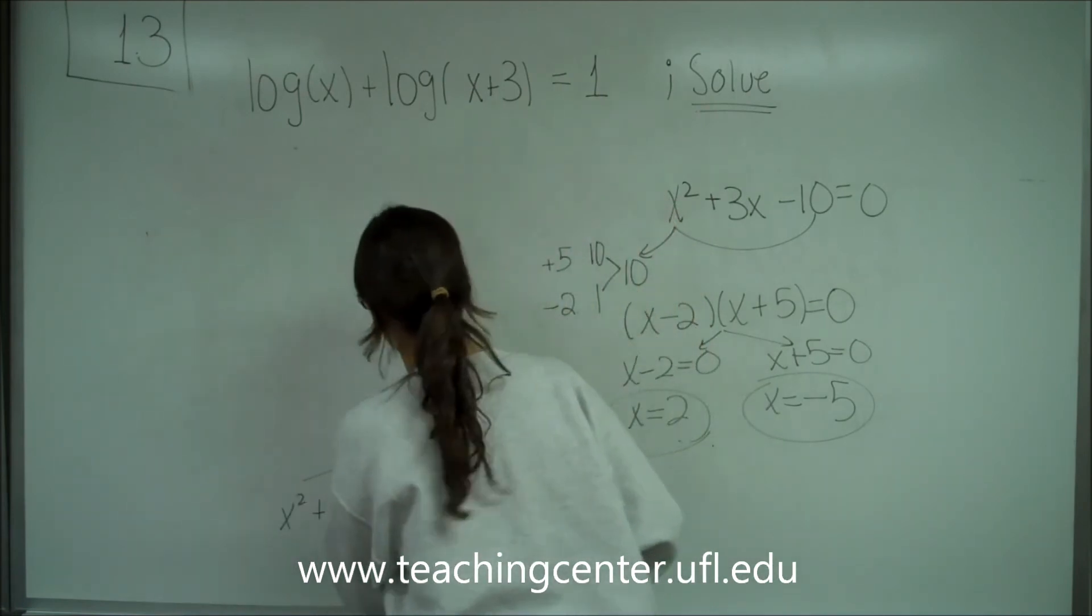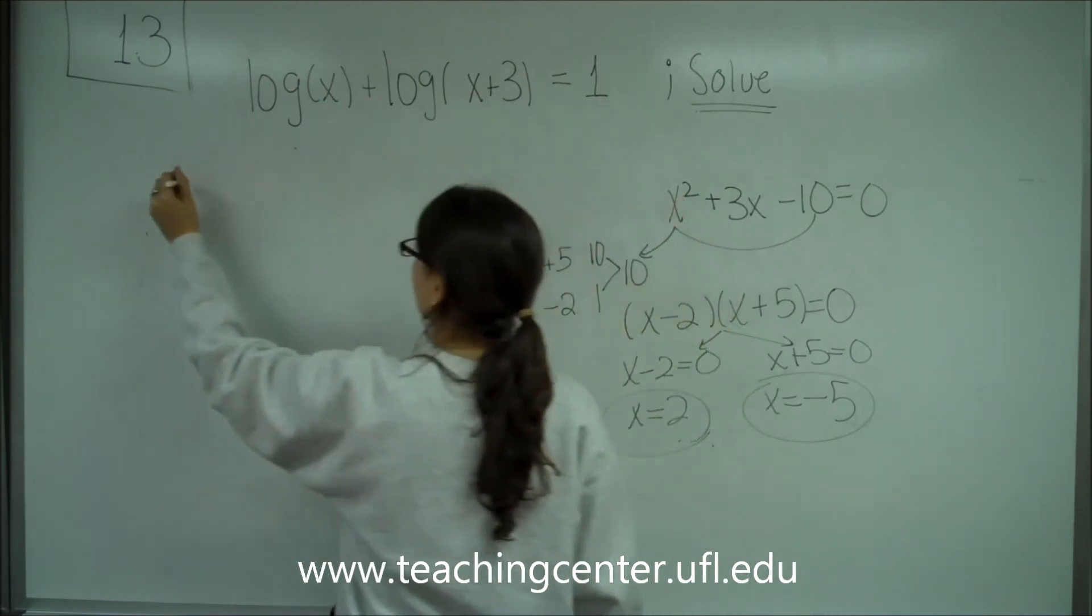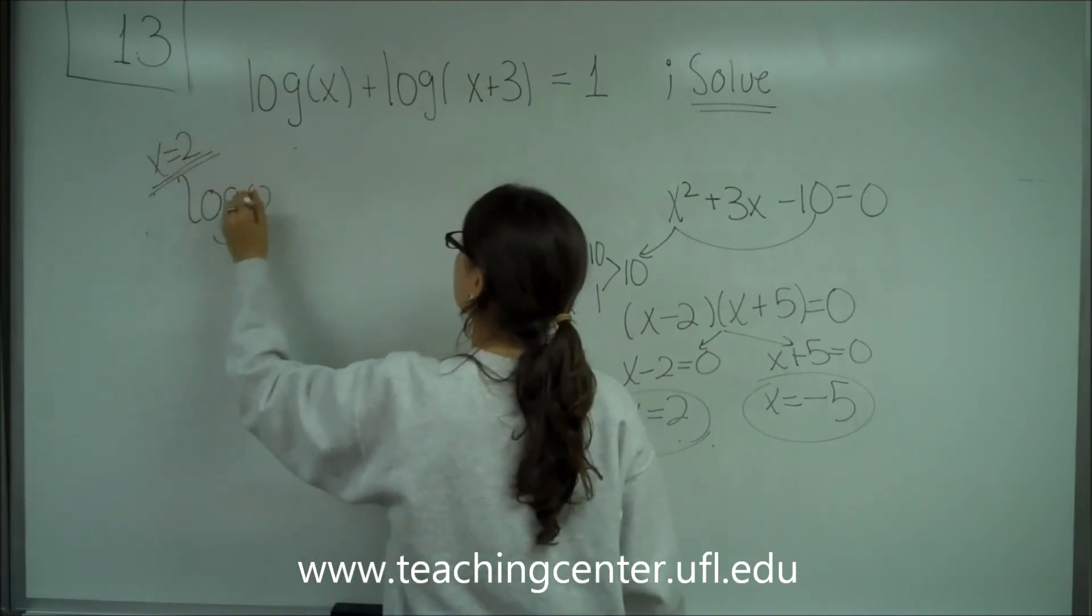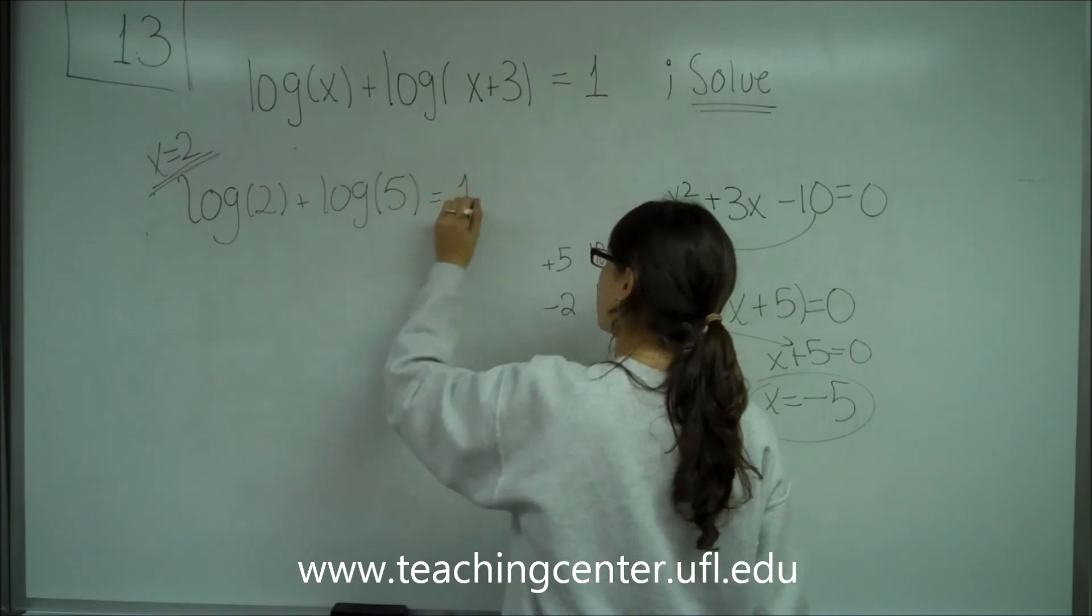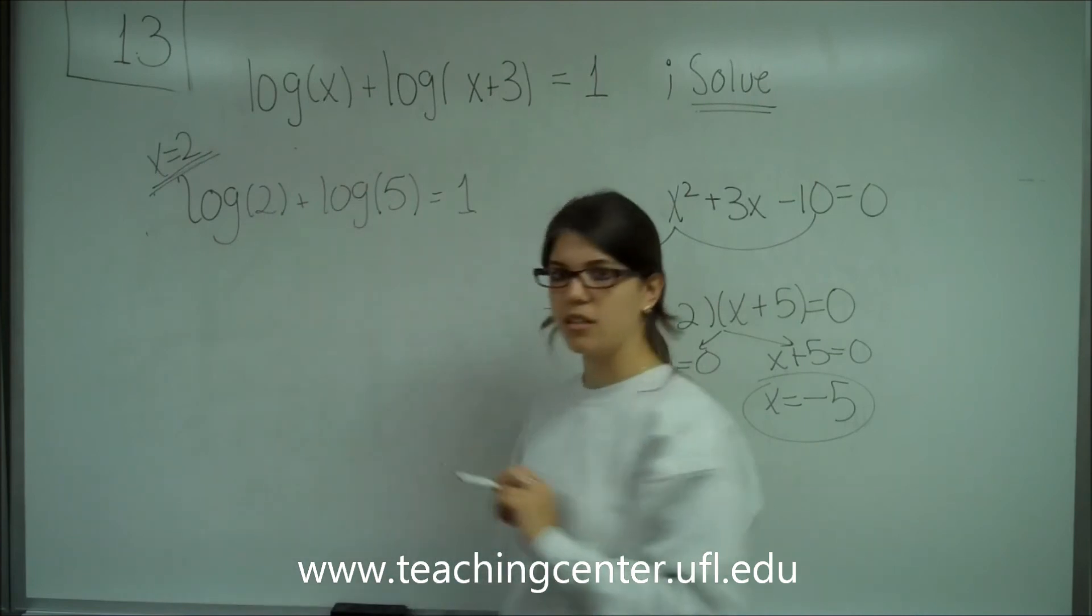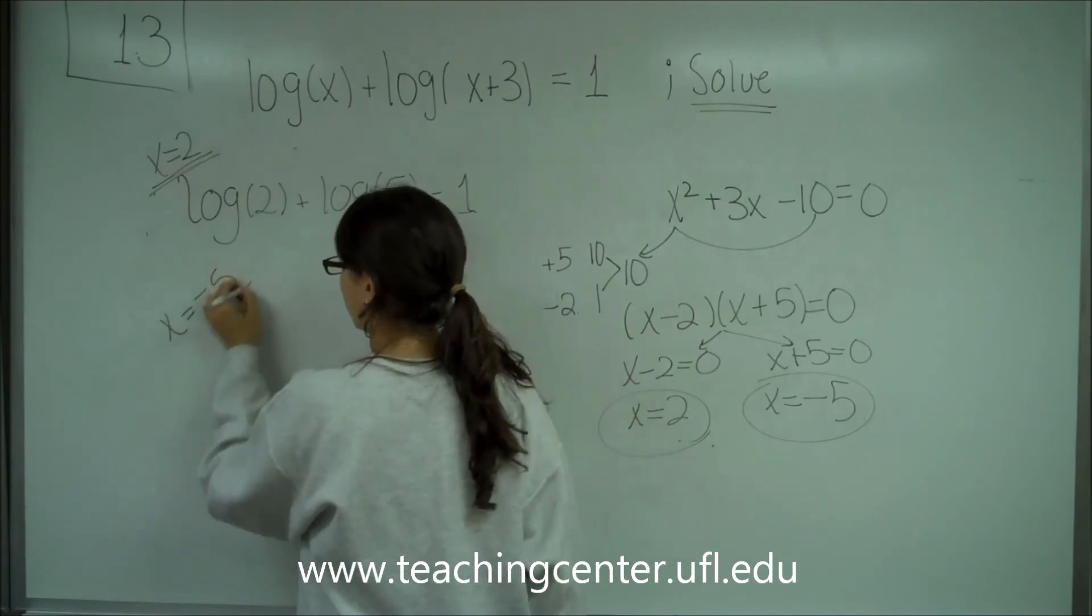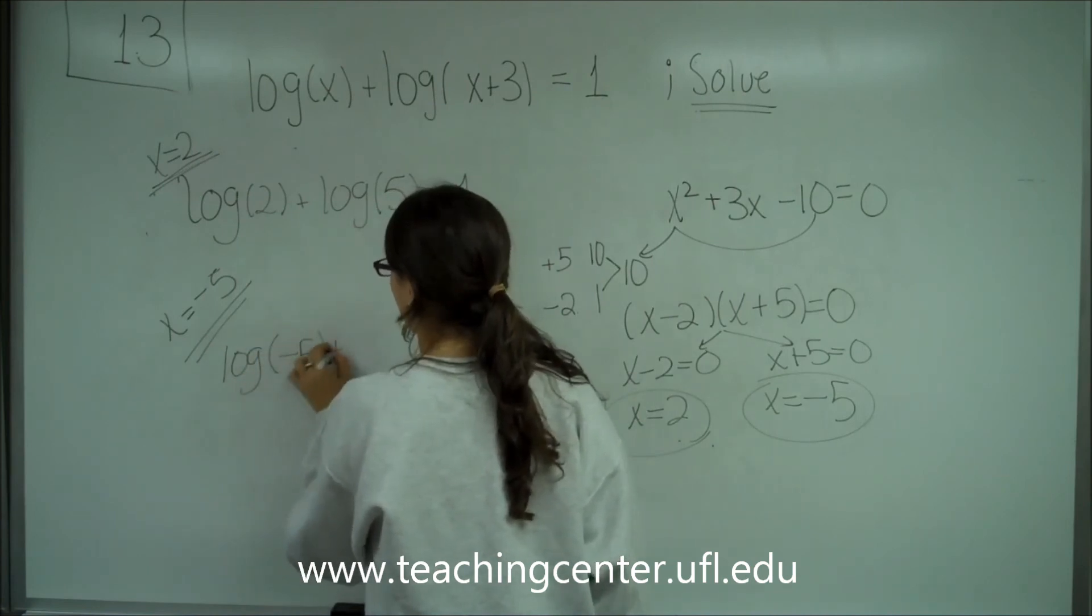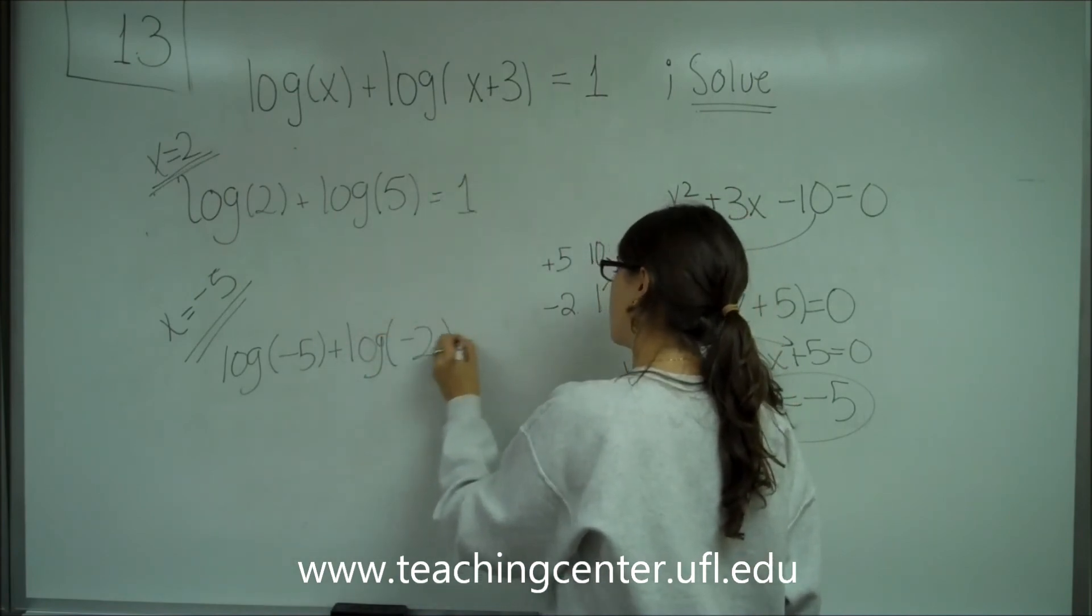So what we're doing is, let's plug in 2 into both of these. So if I plug in 2 to test the first answer, I'm going to get log(2) + log(2+3), which is 5, equals 1. I don't really see a problem with this. This is going to work. Because log(2) exists, log(5) exists. Then, x = -5 is my second choice. So when I plug it in, I get log(-5) + log(-5+3), which is -2, equals to 1.